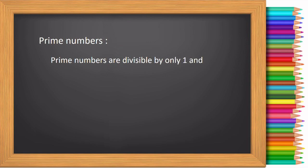First let us see what is a prime number. Prime numbers are divisible by only 1 and itself and it has only two factors, namely 1 and itself.